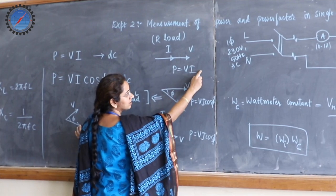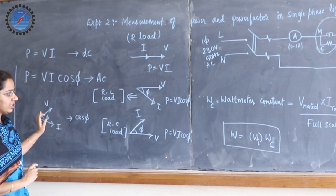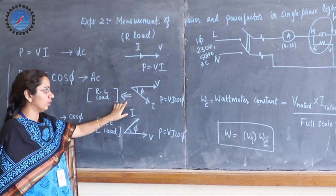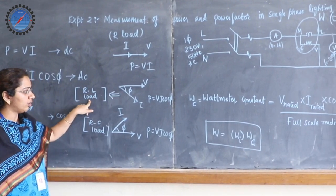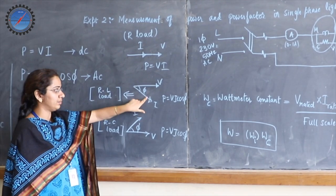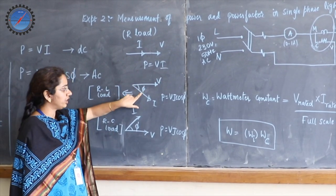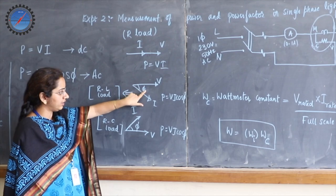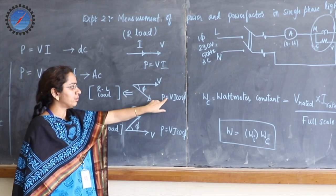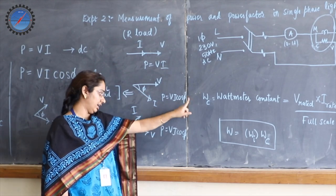That is the reason the cos phi term is taken as 1. Whereas in an RL network, the current always lags by an angle phi with respect to V. So we do have some angle phi, and power is given by the product of V, I, and cosine of this angle.